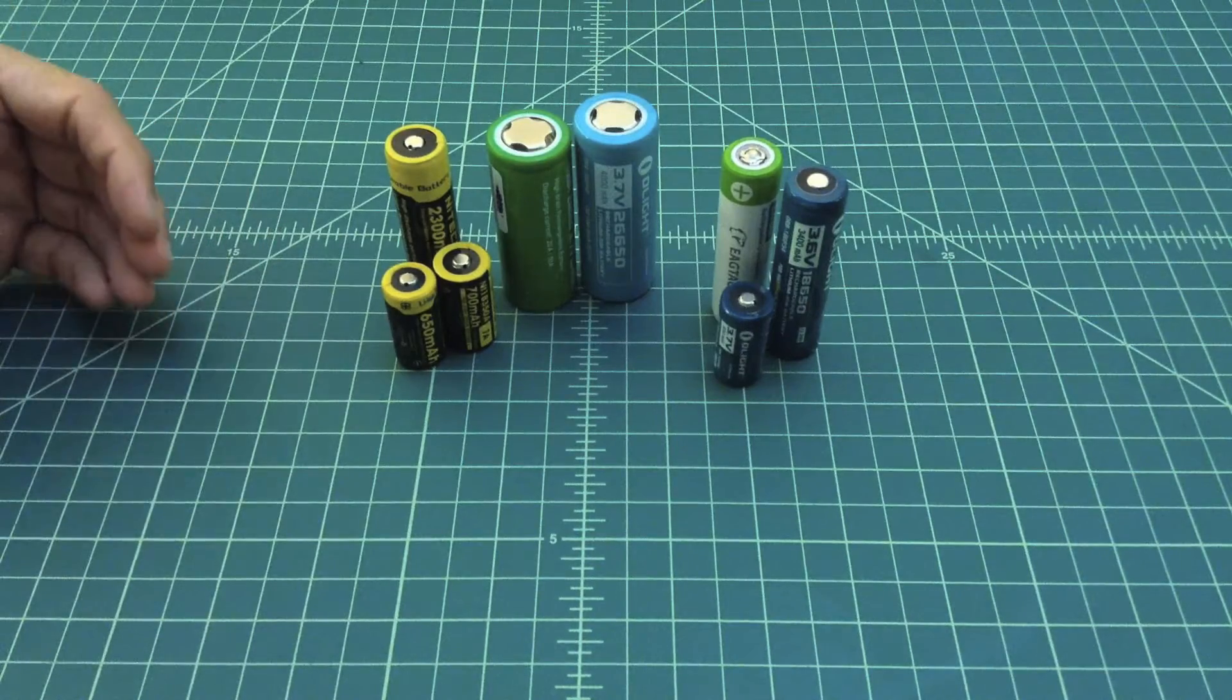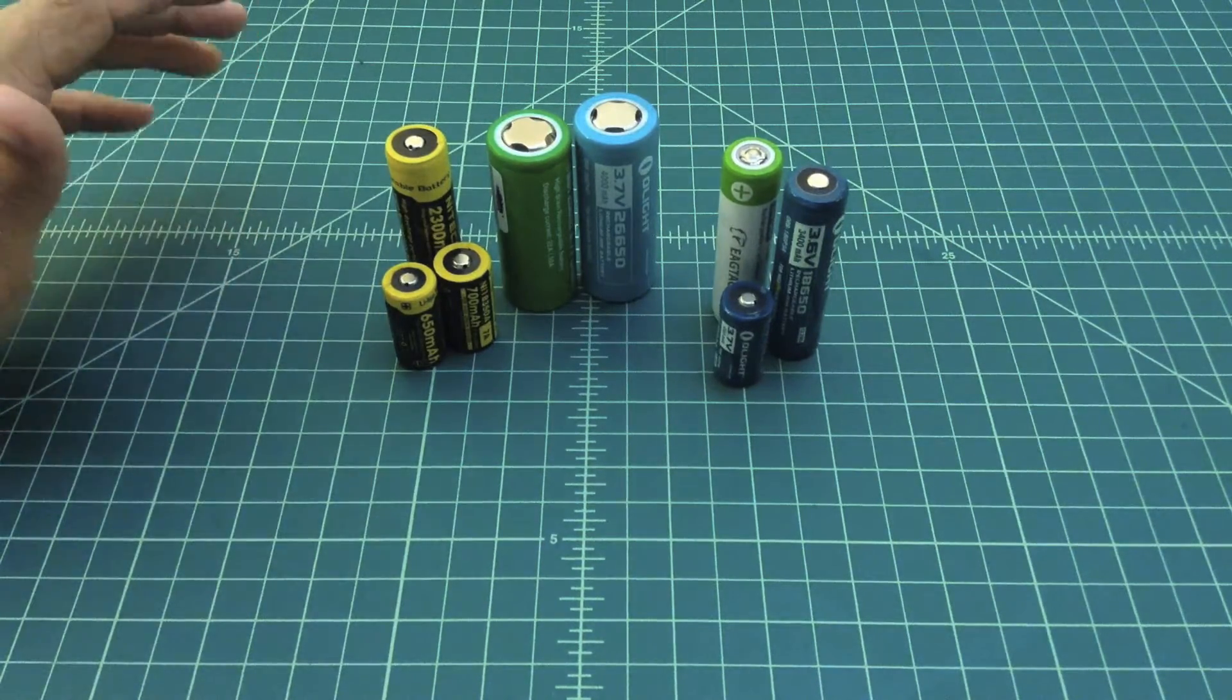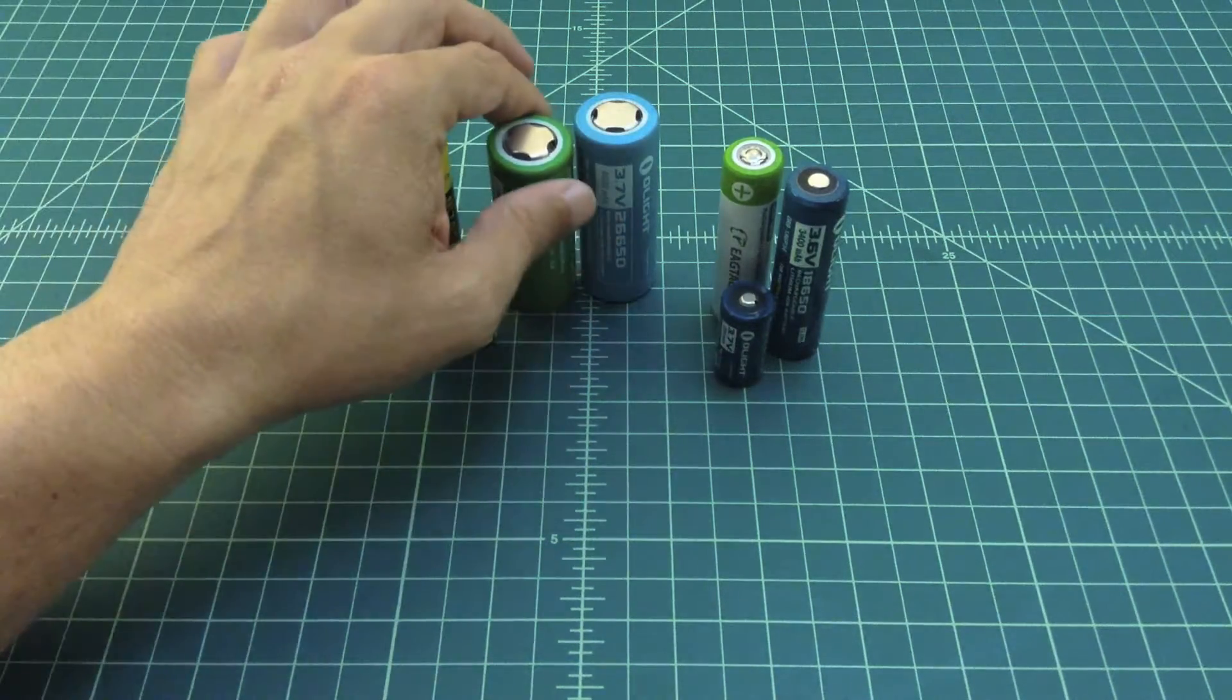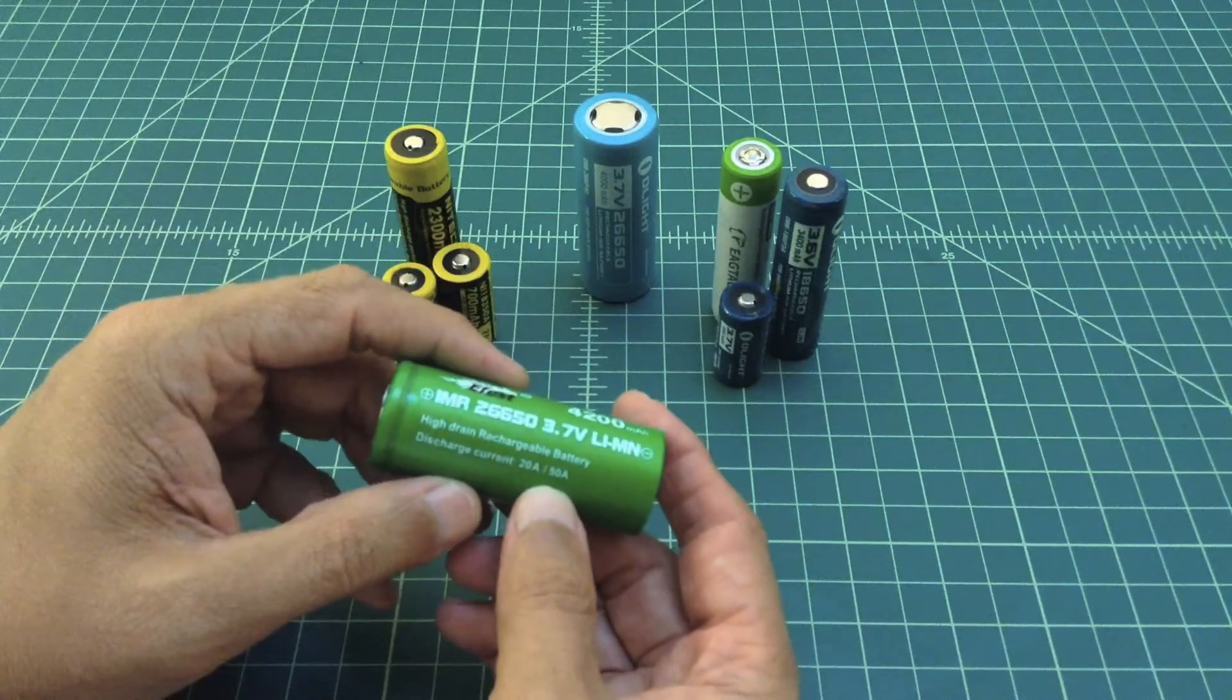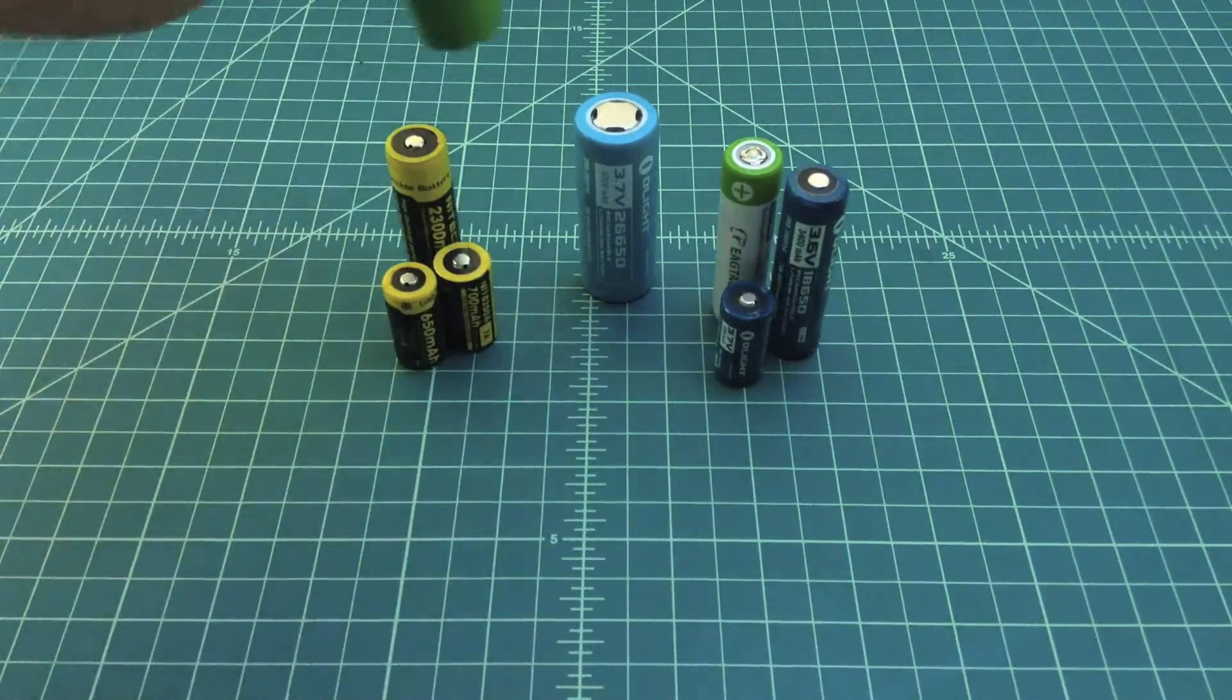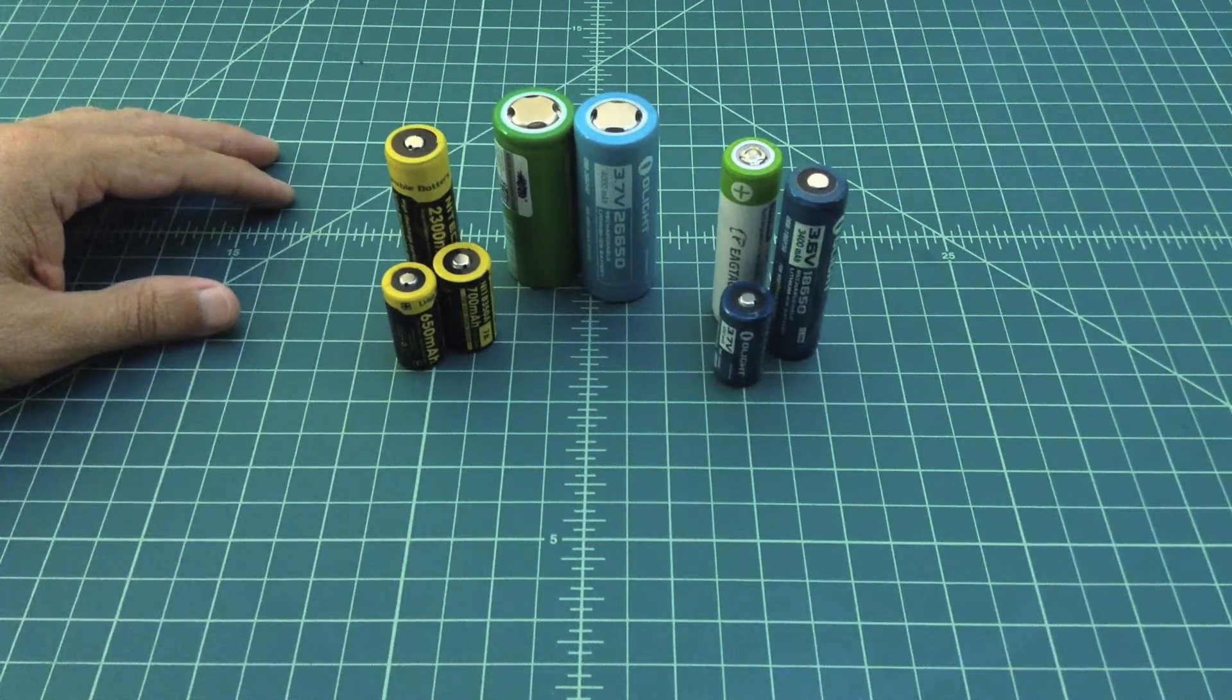You're really more concerned about how much current you can disperse during a specific interval. The problem is that there is no defined interval. Some people may list a pulse rate at 50 amps meaning 5 seconds, it could be 2 seconds, it could be 6 seconds, who knows. Different manufacturers measure it differently, so it's not really a valid measure.